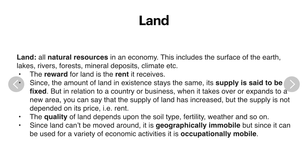Since land is not moveable, it is called geographically immobile, which means it cannot be moved. But since it can be used for many purposes, it is called occupationally mobile, which means it can be used for more than one type of purpose.